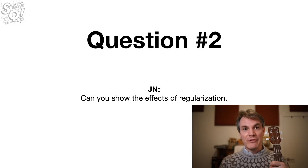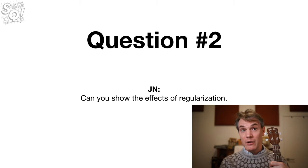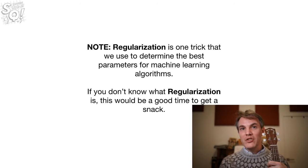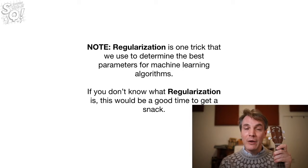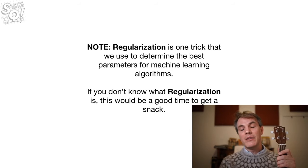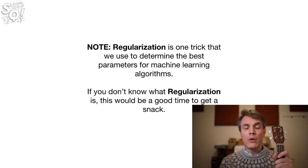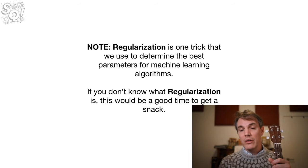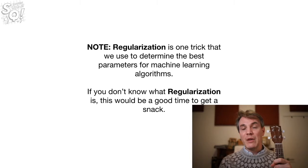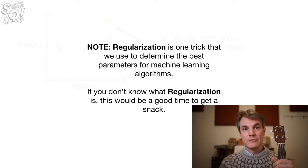All right. Now we're ready for question number two. J.M. asked, Can you show the effects of regularization? Note. Regularization is a trick that we use to determine the best parameters for machine learning. And if you don't know what regularization is, this would be a good time to go get a snack. But come back quick, because the last question is for everybody. And we're all going to learn a lot from that one. And also, if you don't know what regularization is, I would highly recommend checking out the StatQuest on the subject. Because it's one of the most important things in machine learning. And it's used in all kinds of data analysis. Not just machine learning, but statistical analyses as well. It's a general technique for dealing with lots of variables.